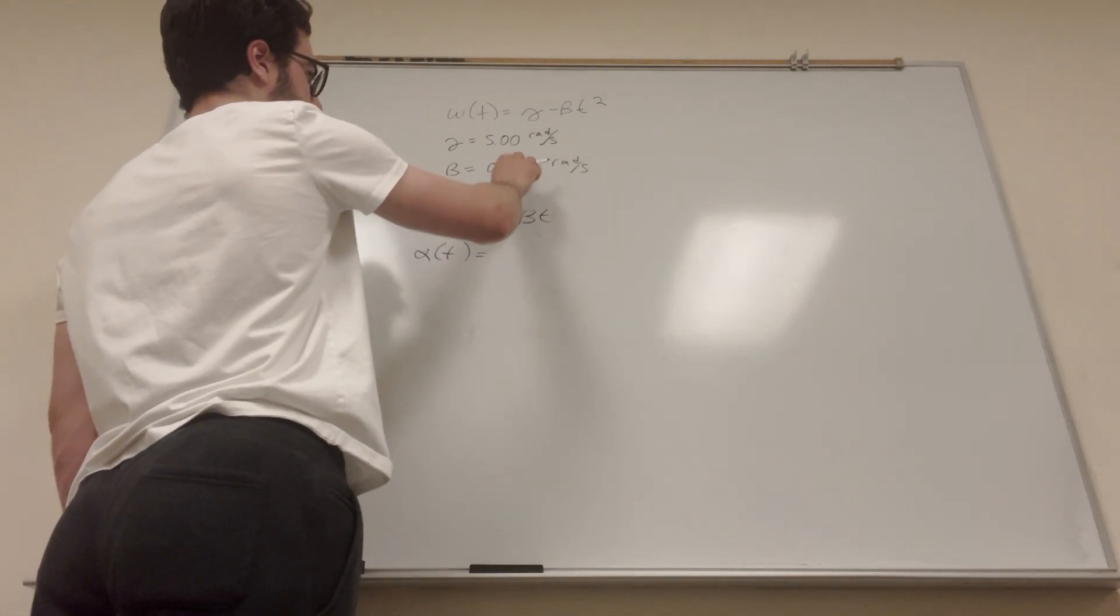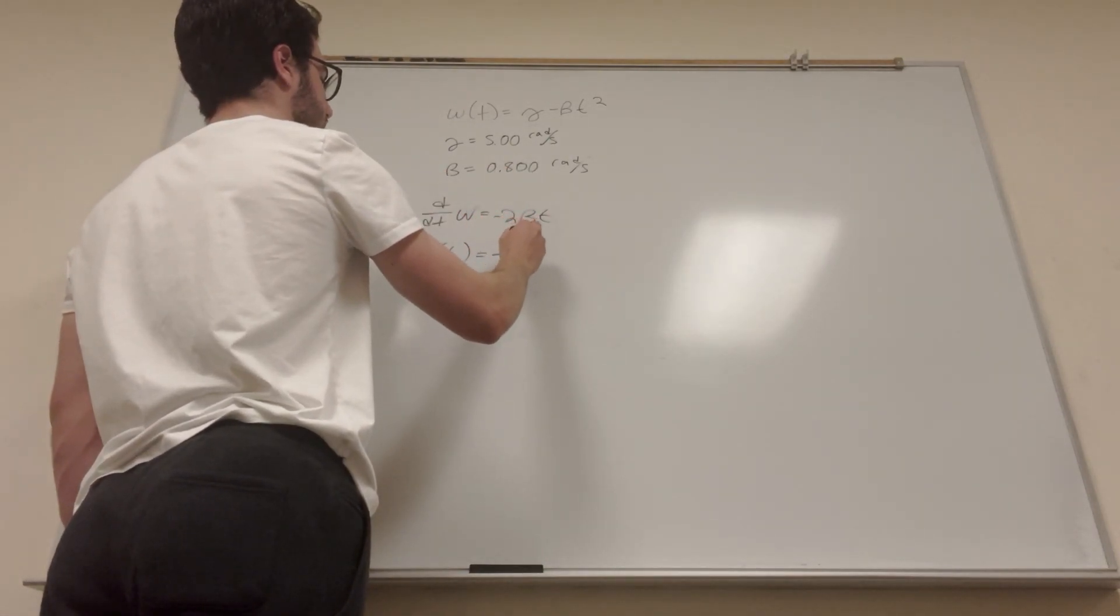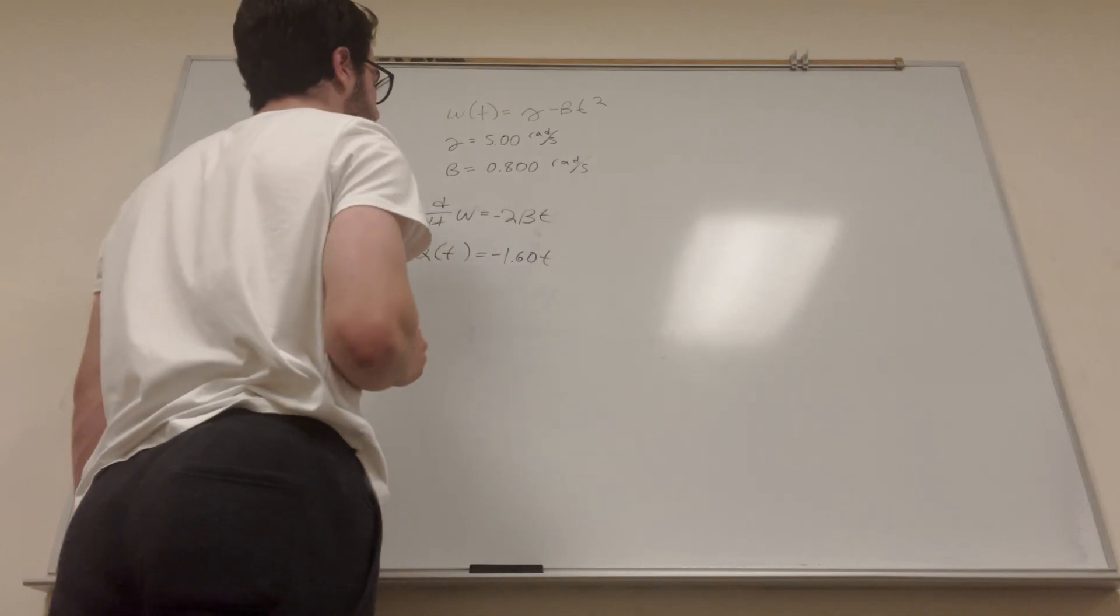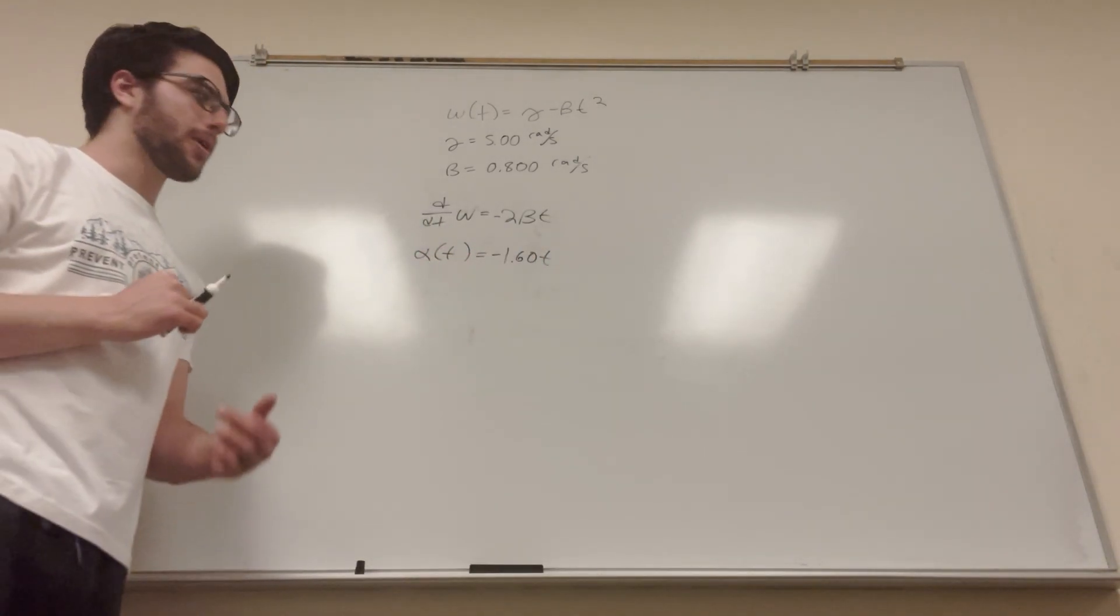And then if you plug in your constant for beta, which is given here, you're just going to get negative 1.60t for acceleration. It's a function of time. So that's the answer to part A.